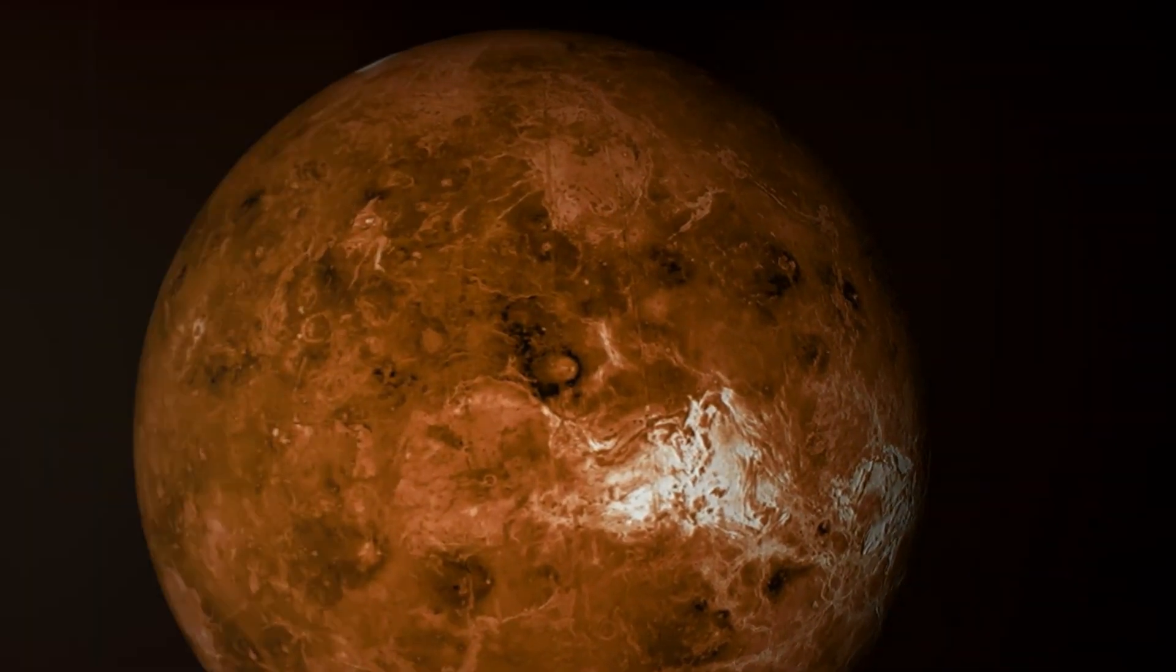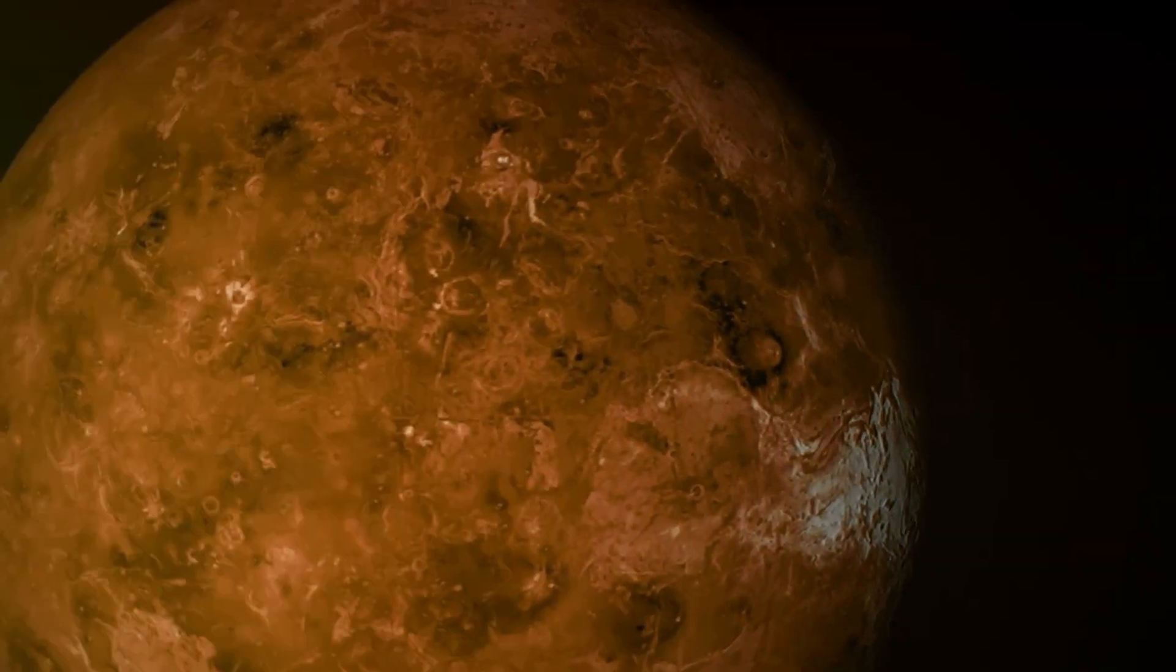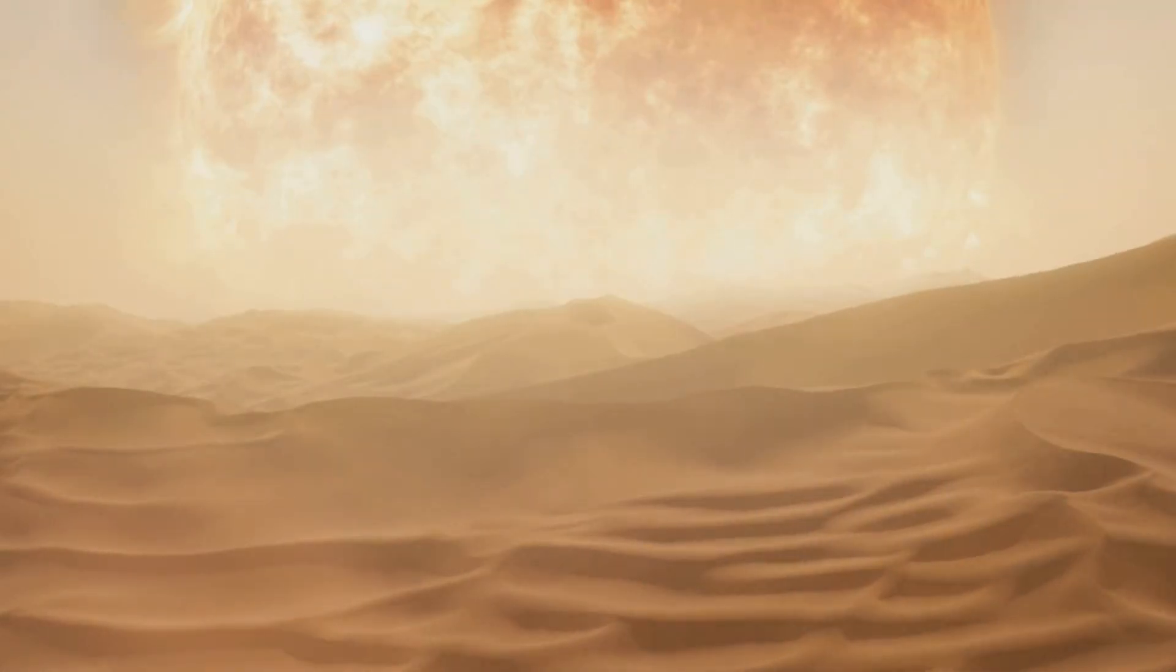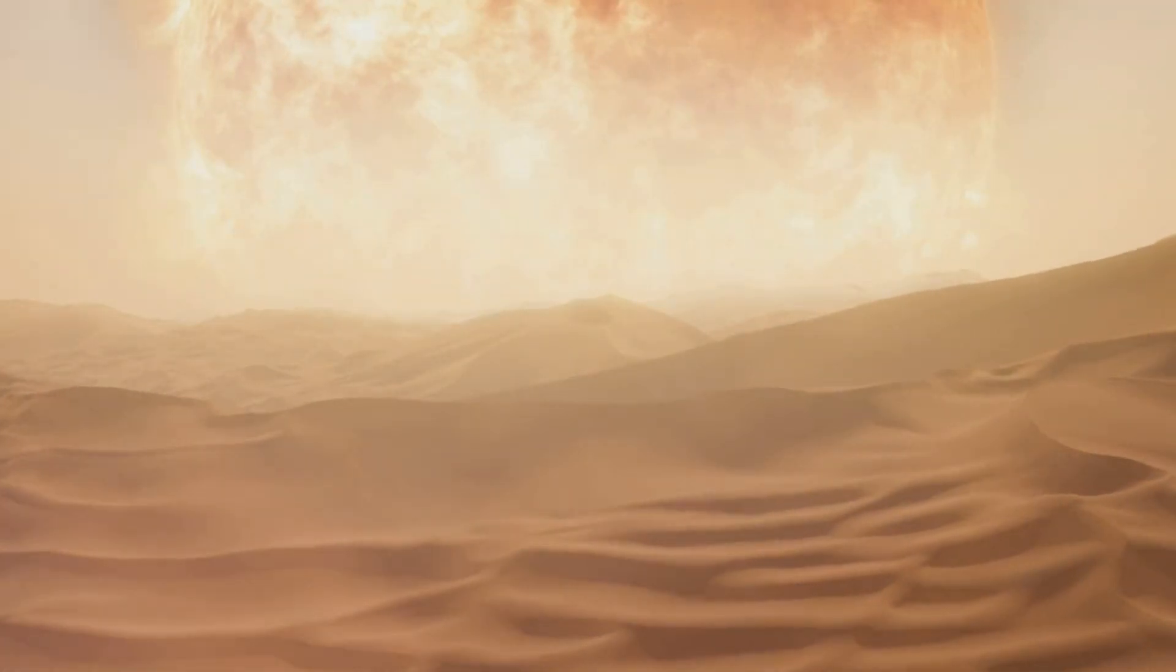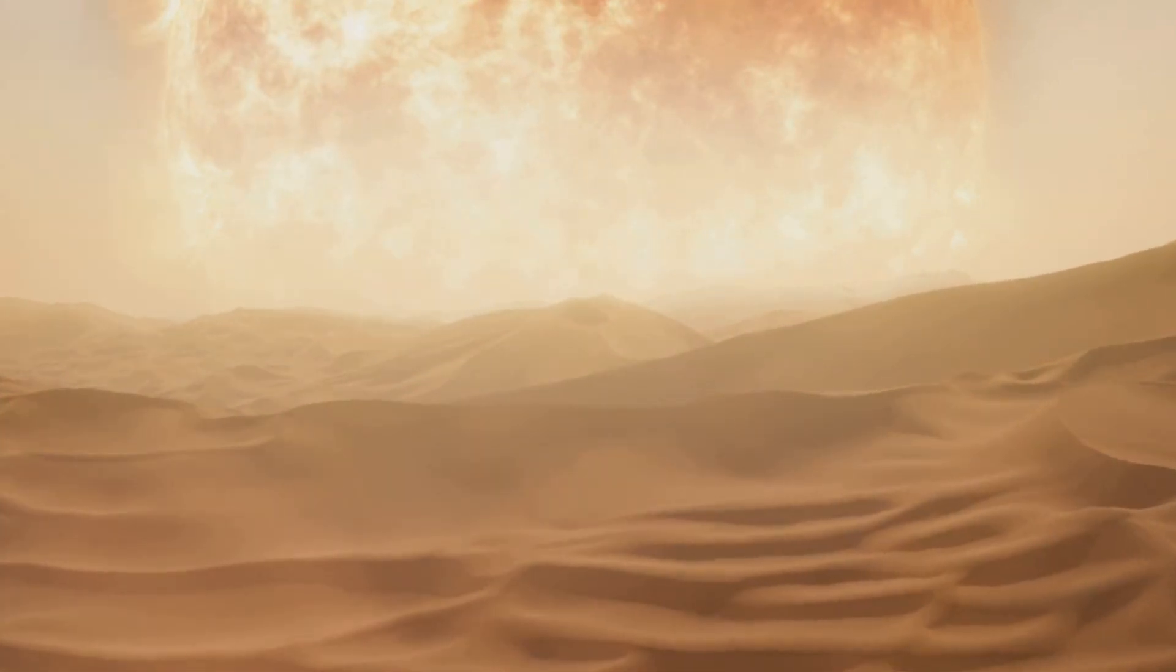Now let's take a leap to Venus, the second planet from the Sun. Known as our sister planet due to its similar size and mass, Venus is anything but friendly. It boasts the hottest surface of any planet in our solar system, thanks to a thick atmosphere that traps heat in a runaway greenhouse effect.